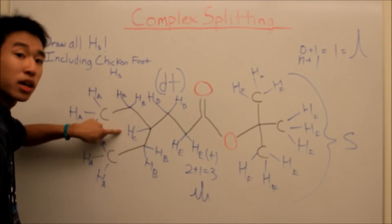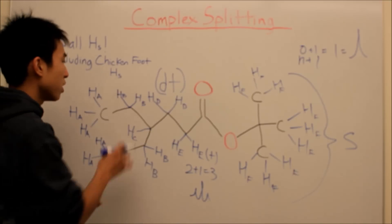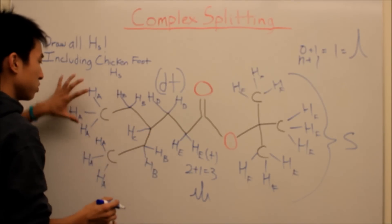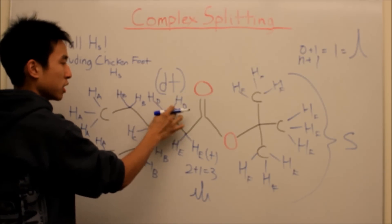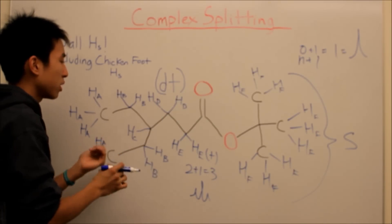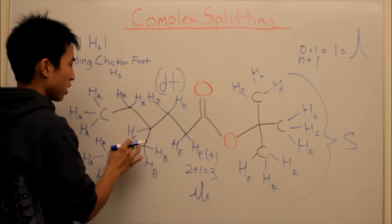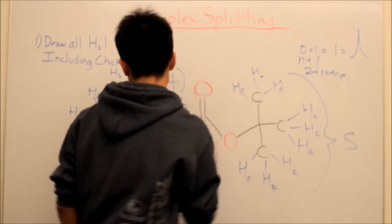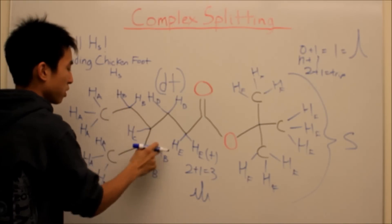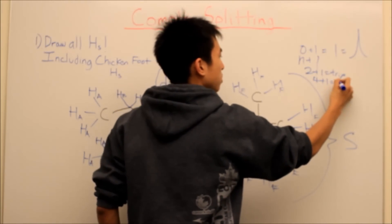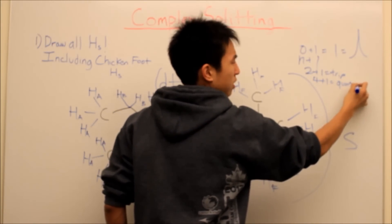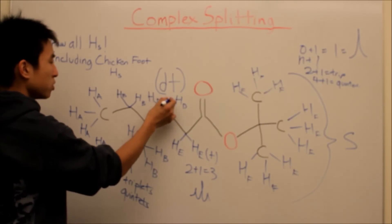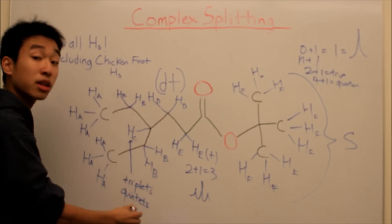Let's do HC. HC is sandwiched — it has four hydrogen neighbors within three bond distance: one bond, two bonds, three bonds on each side. And it's also being split by HC neighbors. So we do the lower number first: two hydrogens plus one gives a triplet. Then we have four hydrogens plus one, which equals a quintet. So HC gives a triplet of quintets — two plus one giving the triplets, and four plus one giving the quintets.